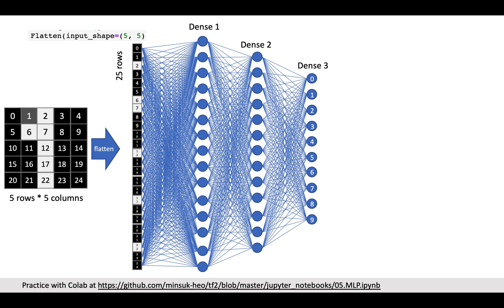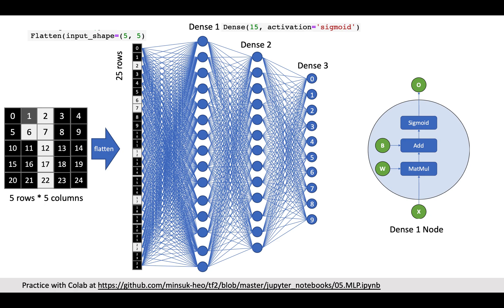First of all, we shall reshape image data to be flattened data. As you can see, we can flatten data with simple TensorFlow 2 code here. The first dense layer will take 25 inputs and output 15 outputs. This is also just one liner in TensorFlow 2.